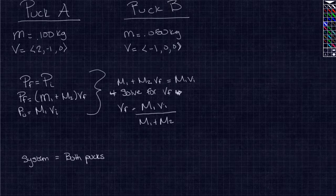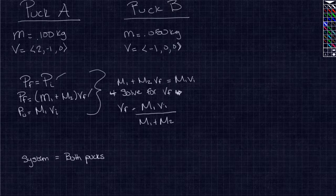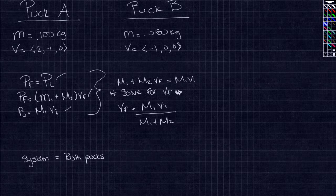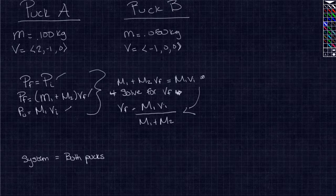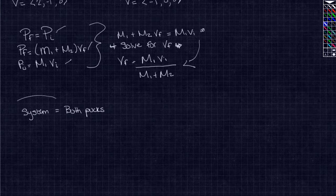We are going to use the law of conservation of momentum, which is PF equals PI. PF equals mass 1 plus mass 2 times VF, and PI equals mass 1 times VI. We are going to rewrite this to solve for VF, the final velocity of the system, which is both of them.